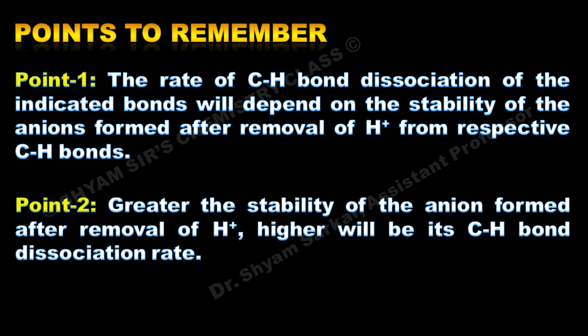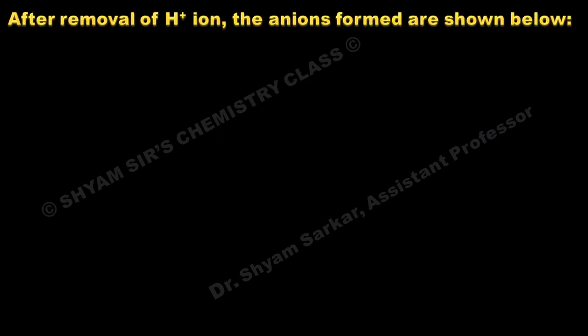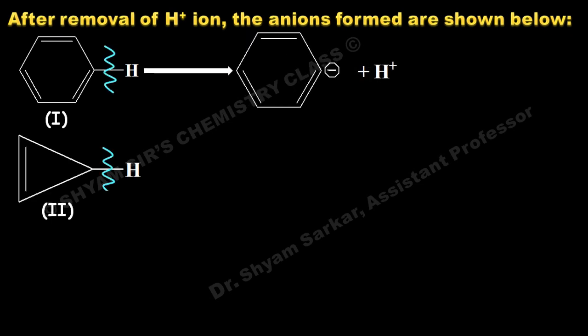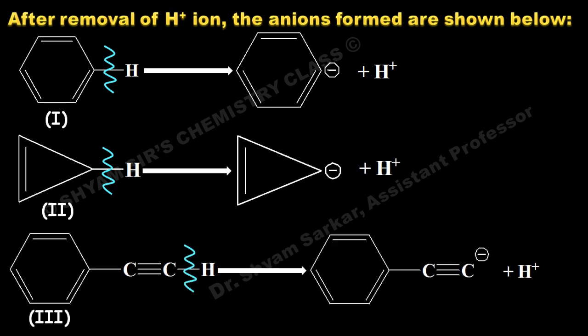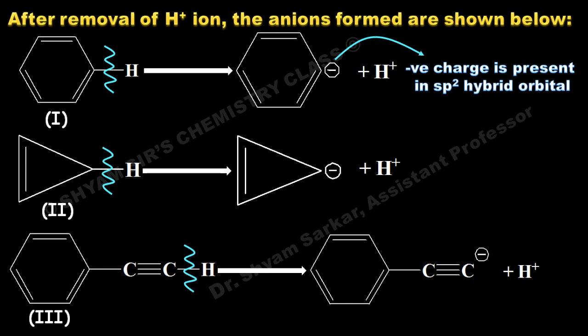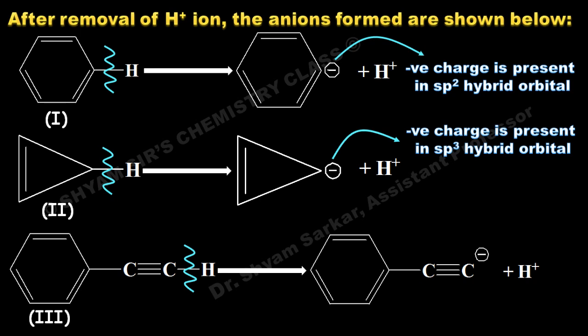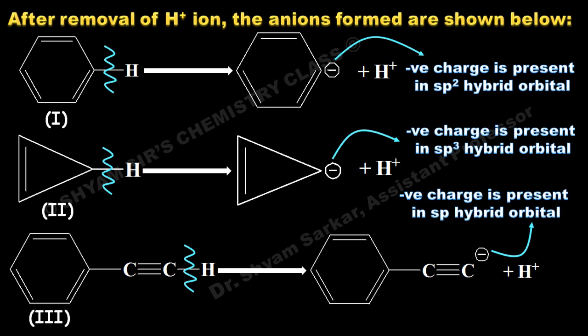So let us go one by one. After dissociation of the first C-H bond, the anion forms like this. For the second one, it forms like this. For the third one, it forms like this. In the first anion, the negative charge is present in the sp² hybrid orbital. In the second anion, the negative charge is present in the sp³ hybrid orbital. In the last one, the negative charge is present in the sp hybrid orbital.